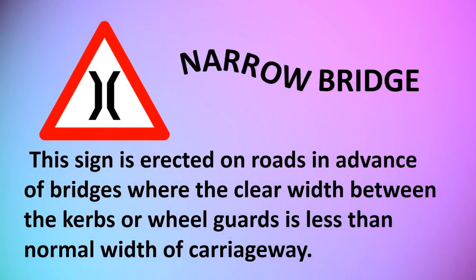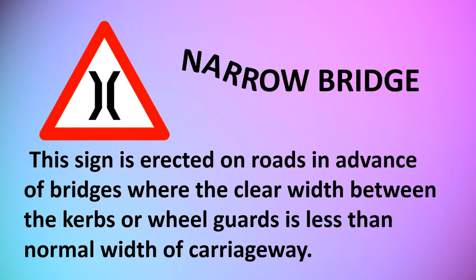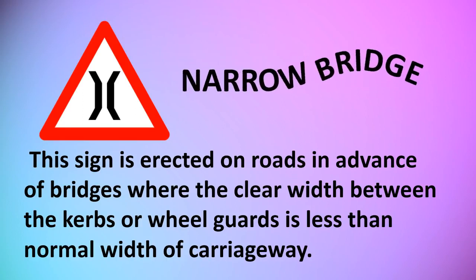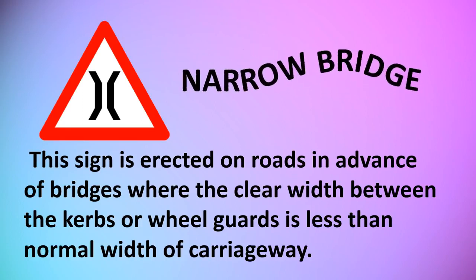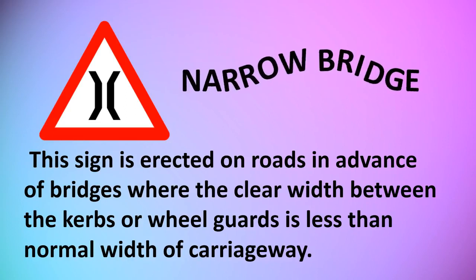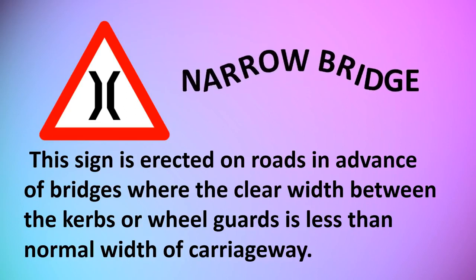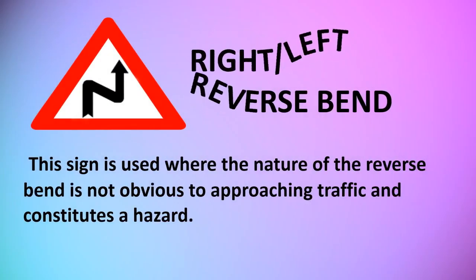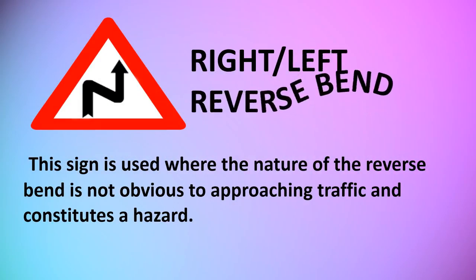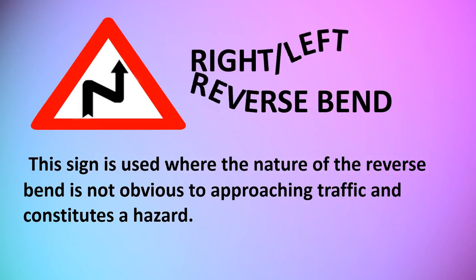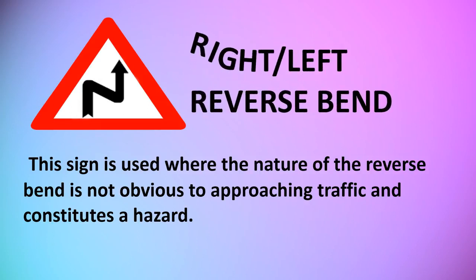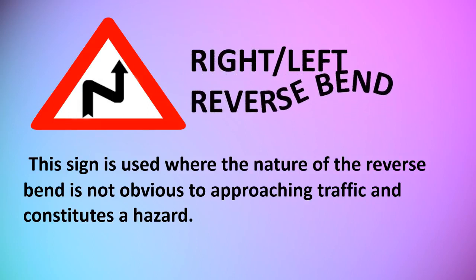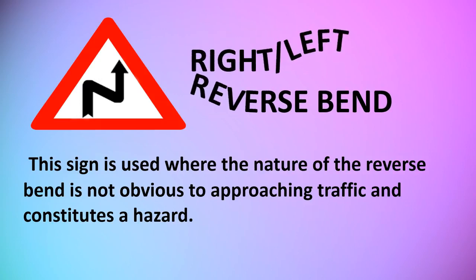Narrow Bridge: this sign is erected on roads in advance of bridges where the clear width between the curbs or wheel guards is less than the normal width of the carriageway. Right or Left Reverse Bend: this sign is used where the nature of the reverse bend is not obvious to approaching traffic and constitutes a hazard.